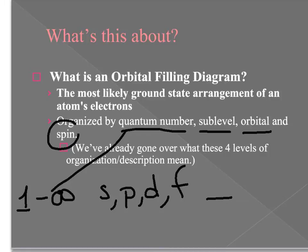The last way that electrons are organized in orbital filling diagrams is by their spin. Electrons are represented using arrows, and within an individual orbital you can have an electron either spinning clockwise or counterclockwise. Clockwise is represented as spin up and counterclockwise is represented as spin down.